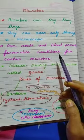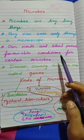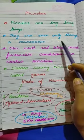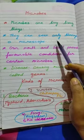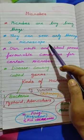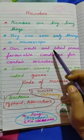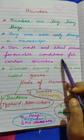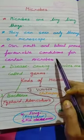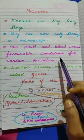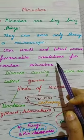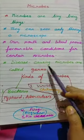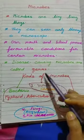Microbes are tiny living things and we cannot see them with the naked eye — we need to see them through a microscope. Our mouth and blood provide favorable conditions for certain microbes. If we do not brush properly, there will be damage from microbes, which are called germs.